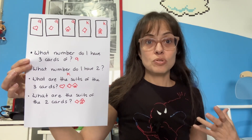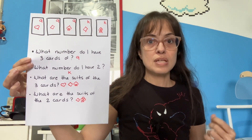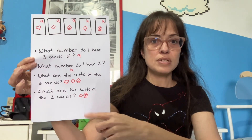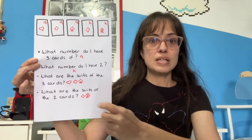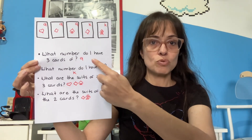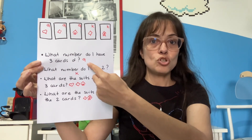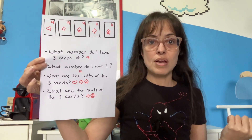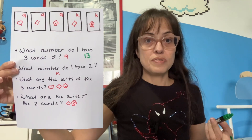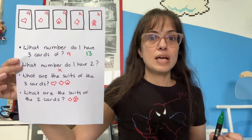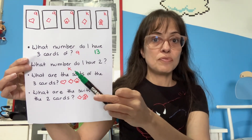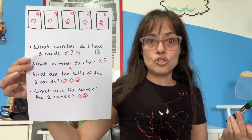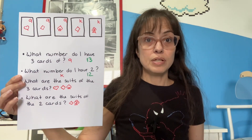But now, what is the answer to the question, and how many different ways could I have done this? The answers to each of the questions are irrelevant. What's relevant is the number of possible choices I had for each one. When I chose the nine, I had 13 different possibilities — the number of types of cards in a deck. But when I said the second type of card was a king, I had 12 different answers, because it couldn't be a nine anymore.